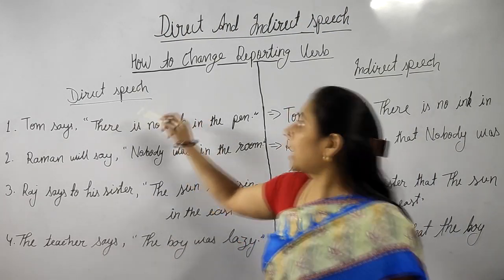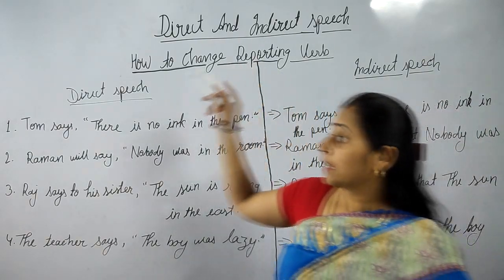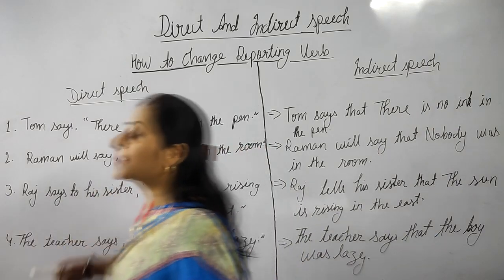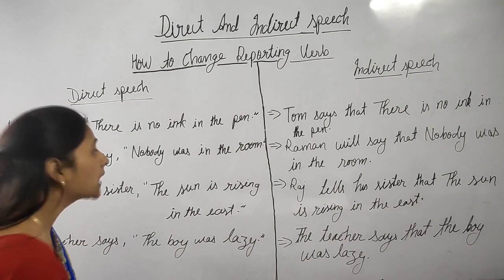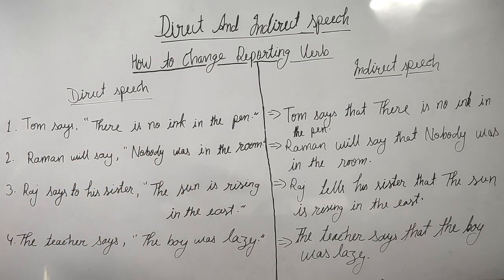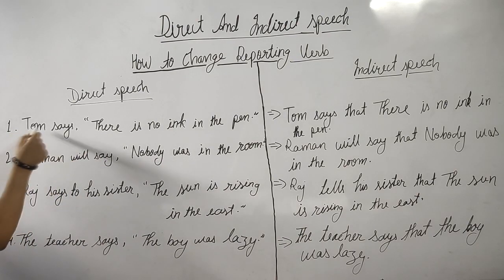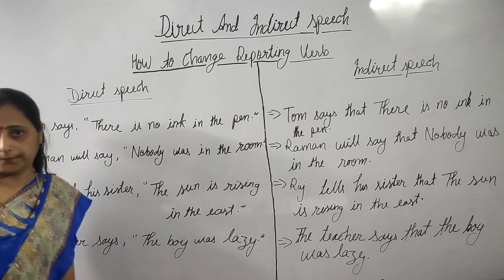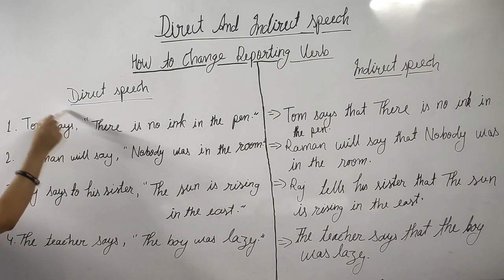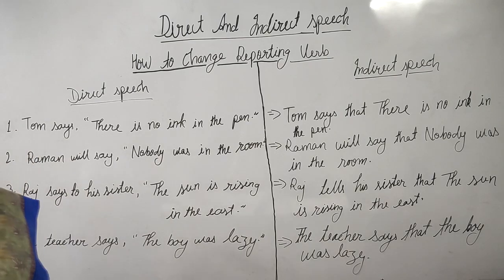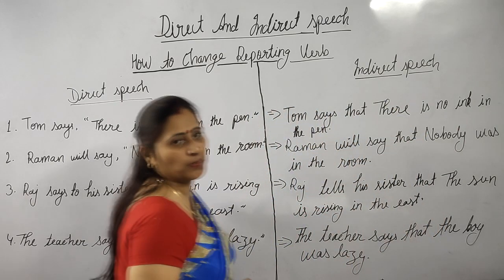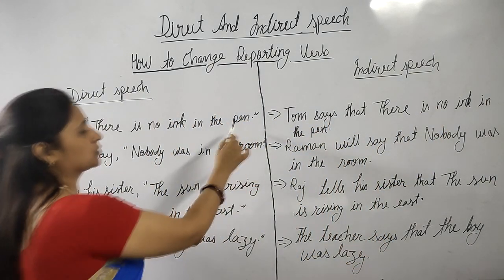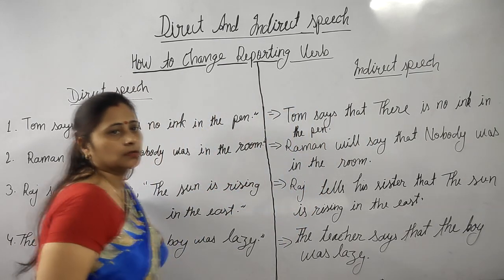Now I will tell you how to change the reporting word. If the reporting word is in the simple present tense or simple future tense, then we don't have to change the reported speech. So let's start. Here you can see this example: Tom says, 'There is no ink in the pen.' The reporting word here is simple present tense, so we don't need to change anything in the reported speech. Tom said that there is no ink in the pen — we have changed only the conjunction 'that.'